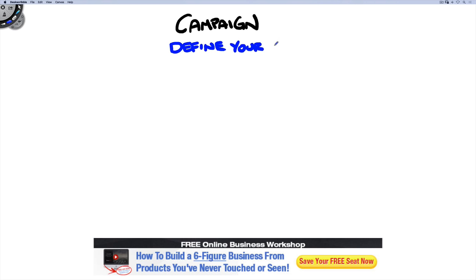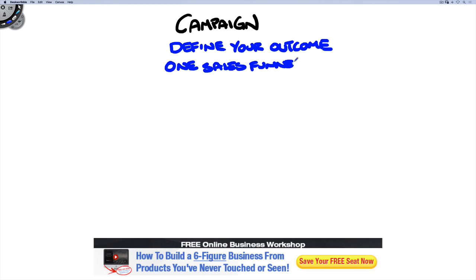For example, if you're selling a physical product, you want Facebook to optimize your ad based on the purchase of your product. Under the campaign level, you want to advertise one funnel or sales funnel at a time. Let's say you are selling a pen — that pen goes in that campaign. You don't want to sell a pen, a pencil, and an eraser in the same campaign. You want one item or one sales funnel per campaign.